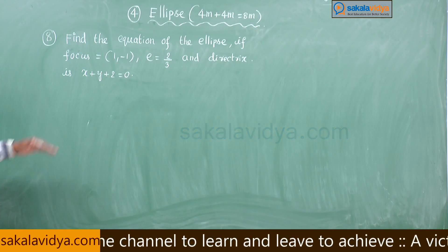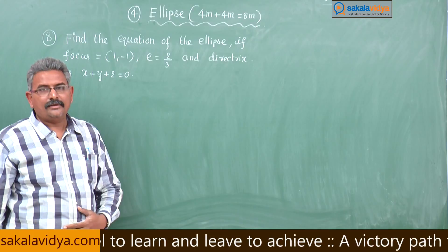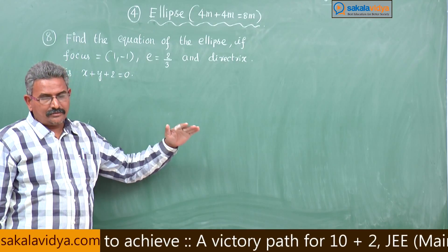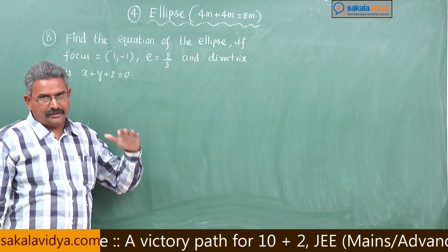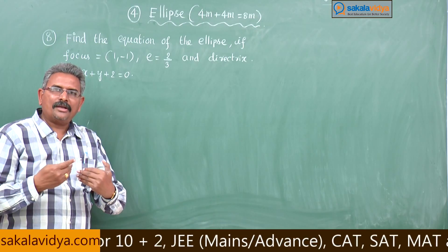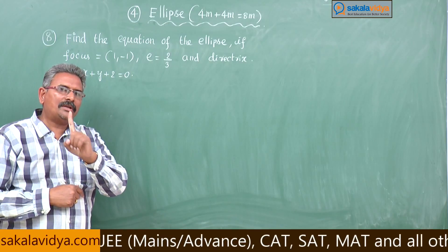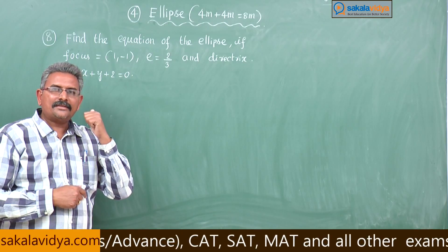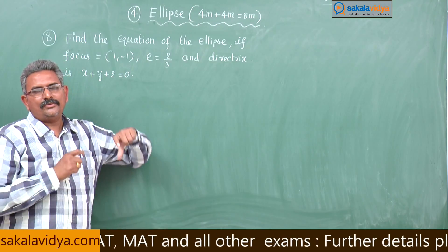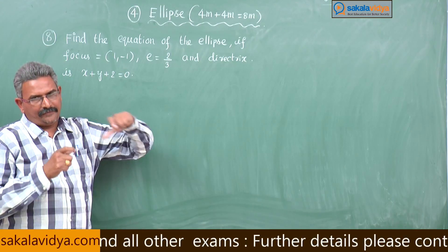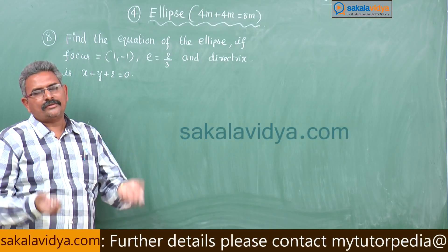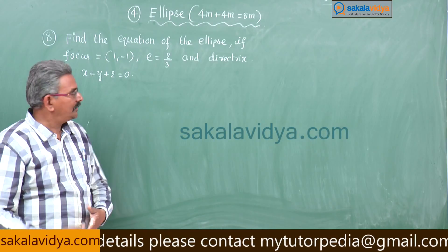That means the focus of the conic, eccentricity of the conic, and equation to the directrix of the conic are given. A conic may be an ellipse or a parabola. For a parabola, E equals 1; for an ellipse or hyperbola, the E value is given. Using the conic definition, we have to find the equation of the ellipse or hyperbola.